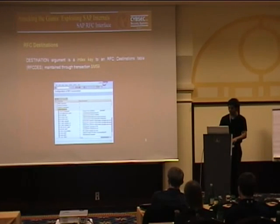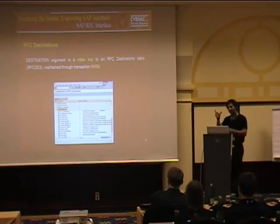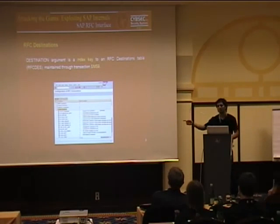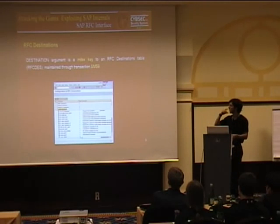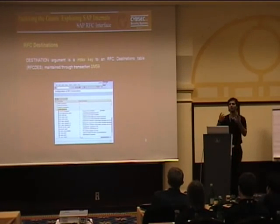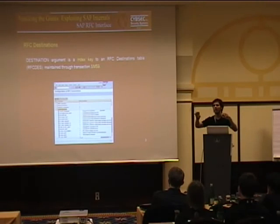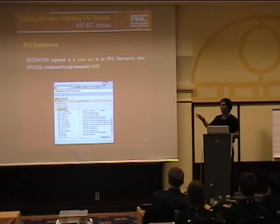The destination keyword like 'PRO2' is really an index key into a table called the RFC destination table, maintained through transaction SM59. That keyword in the table specifies all the connection parameters — so 'PRO2' is going to connect to this system using maybe this user, this client, etc. The call is made using the index key, but all the actual connection parameters are stored in that table.